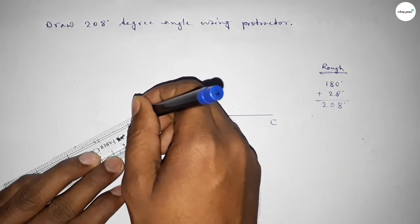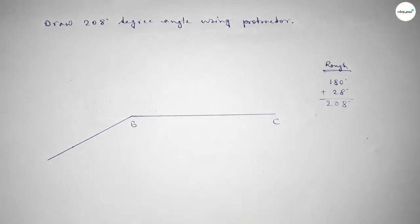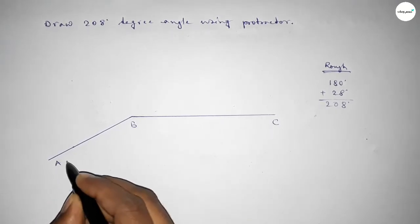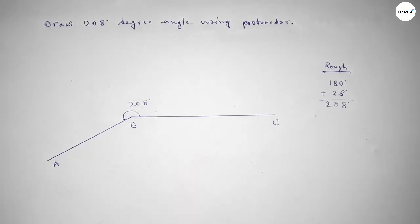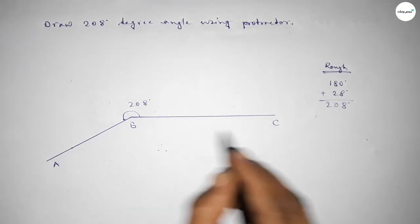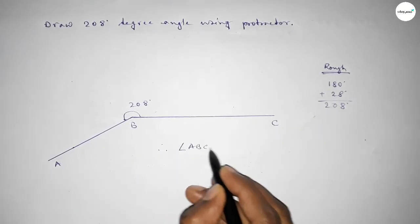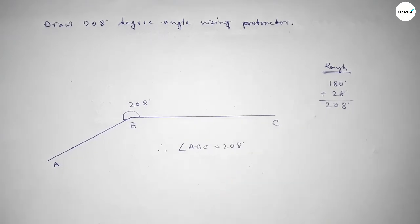Now joining this side and taking here point A. So angle ABC up to this is 208 degree angle. Therefore, angle ABC equal to 208 degree angle. That's all. Thanks for watching, please share it.